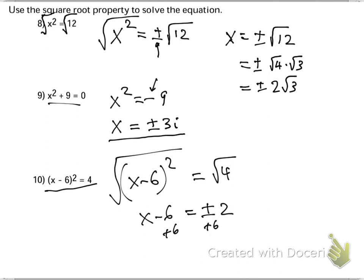If you add a 6 to both sides, you will get x equals 2 plus 6 equals 8, and negative 2 plus 6 equals 4. And those are my two answers. Thank you.